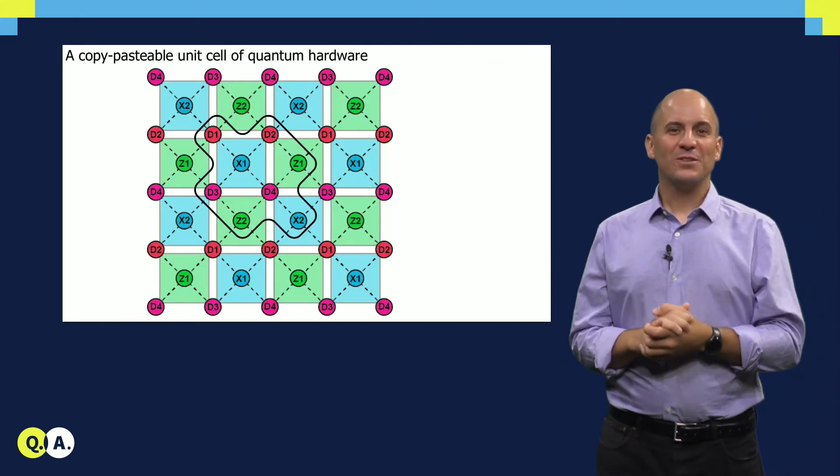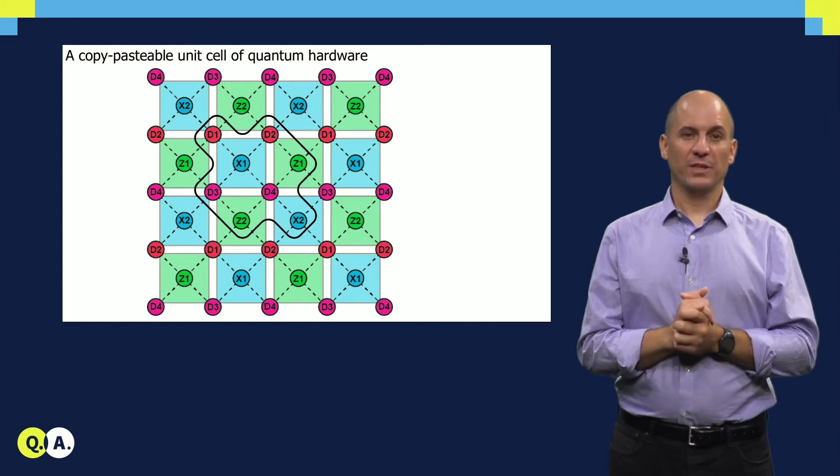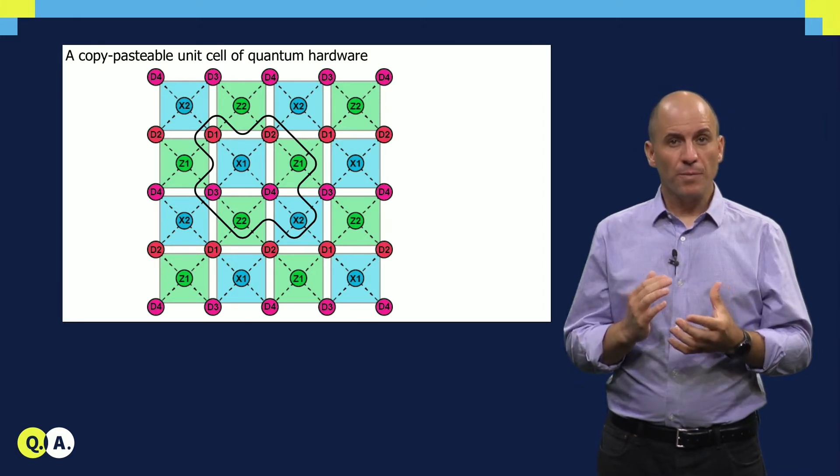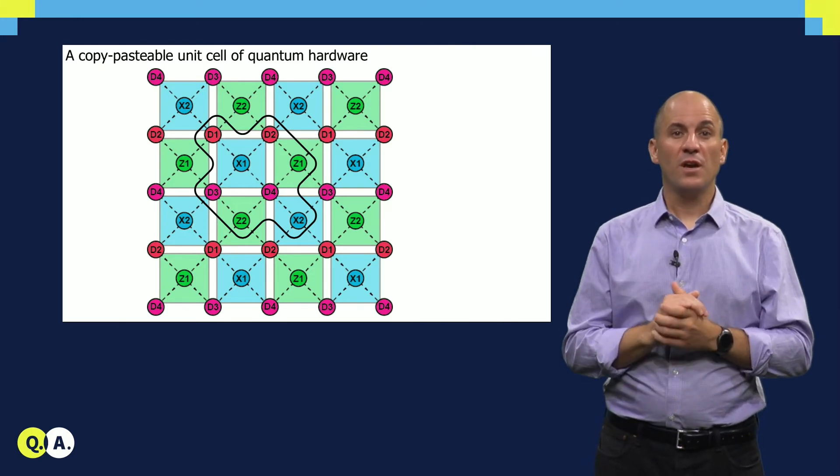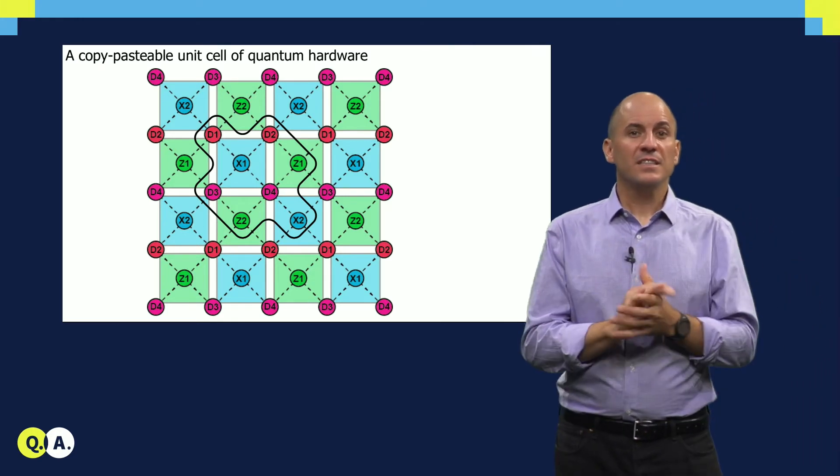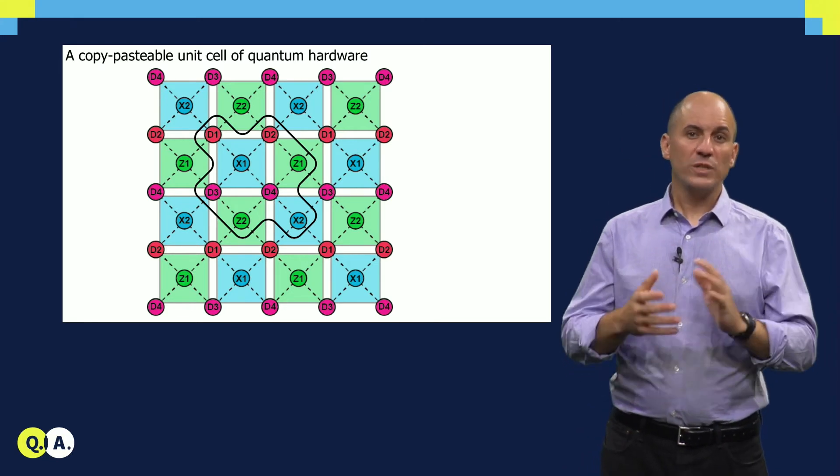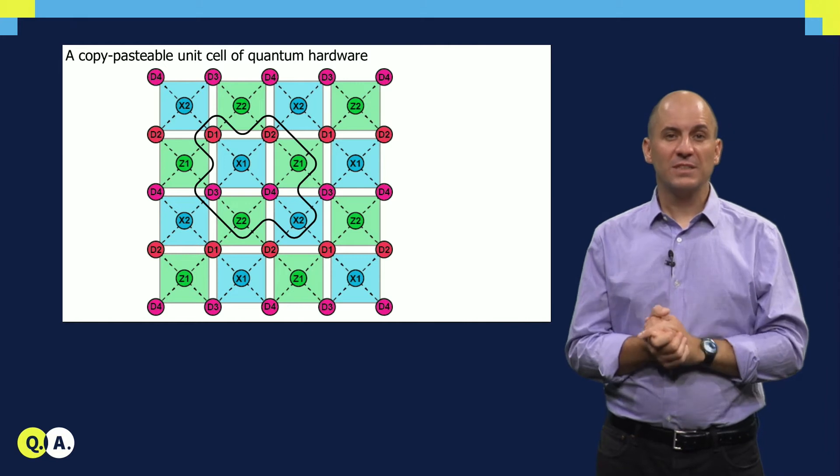The colors we assign to the circles denote the qubit operating frequency, at which single qubit gates are performed. In total, four frequencies suffice to control a surface code of any size. This affords us significant savings in the microwave frequency control electronics, which, unfortunately, I don't have time to discuss here.